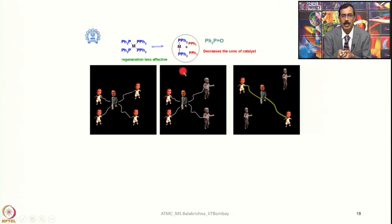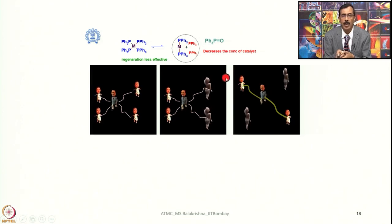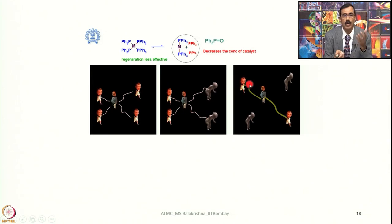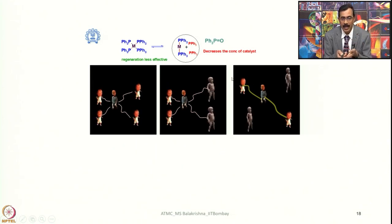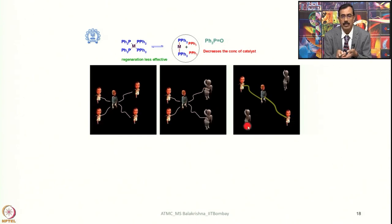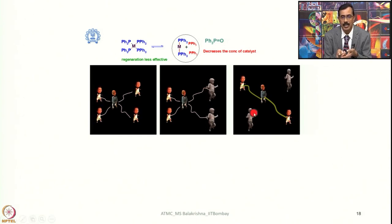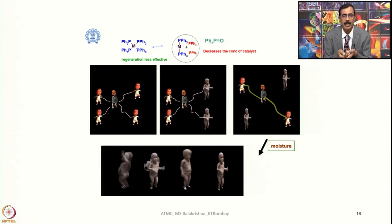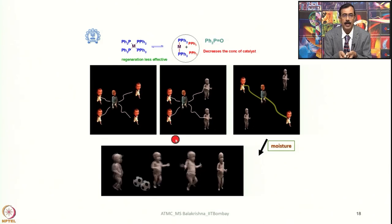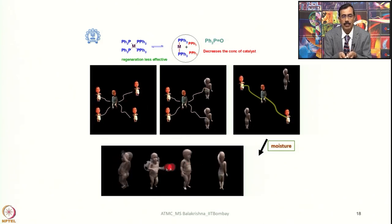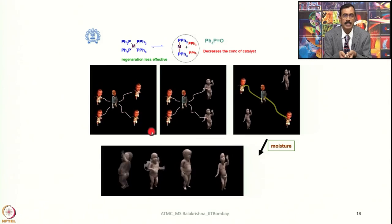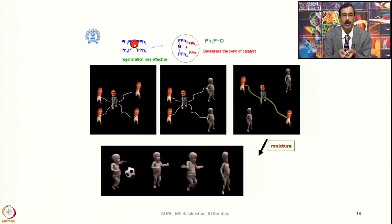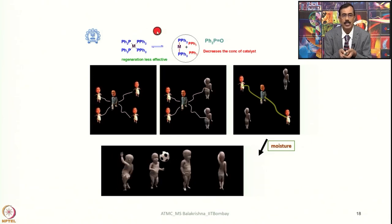This is what happens to tetrakis(triphenylphosphine)palladium compound in solution when we are using it as a homogeneous catalyst for a particular organic transformation. That means basically regeneration efficiency is very low. As a result, the number of catalytic cycles one can perform will decrease. And if moisture intervenes, these compounds are highly susceptible to oxidation — phosphine can readily form phosphine oxide — and the entire metal complex is decomposed.